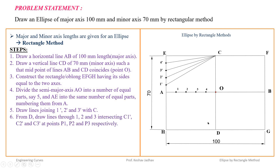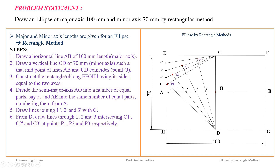From D, draw a line passing through point 1 and extend it up to line C1 dash — the intersection is point P1. Then from D, draw a line through point 2 extending to line C2 dash — the intersection is P2. Similarly, through point 3 extending to C3 dash gives P3, and through point 4 extending to C4 dash gives P4. In this way we get intermediate points between A and C.